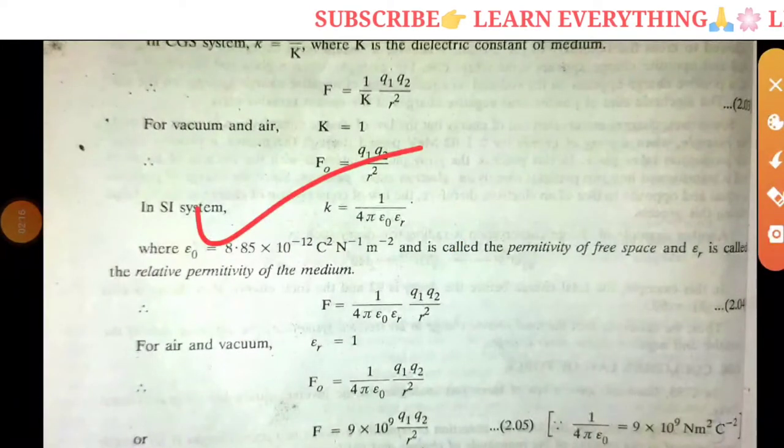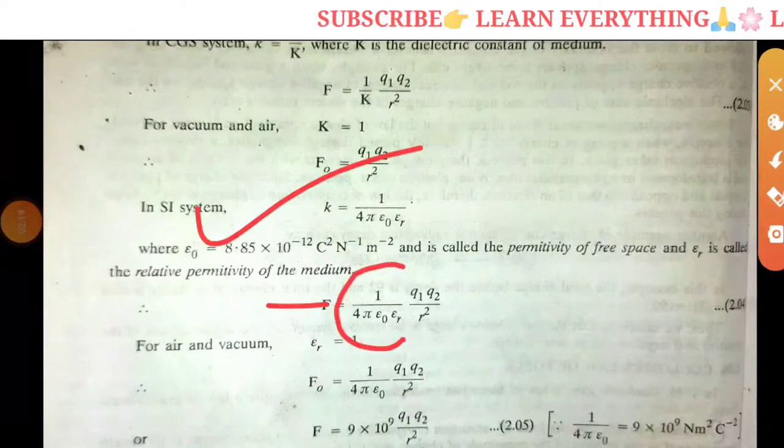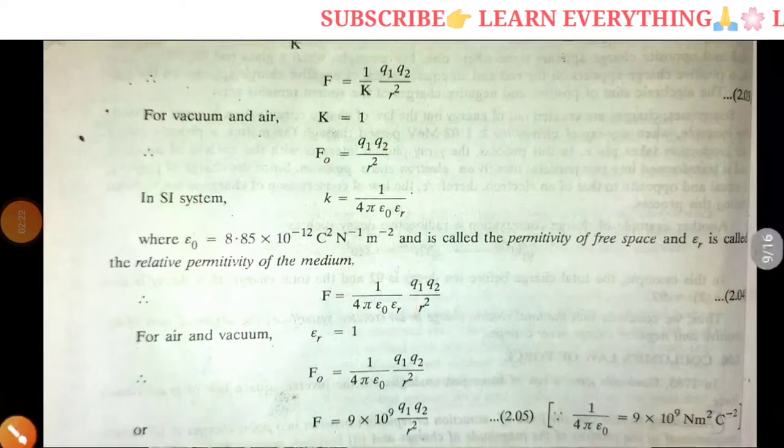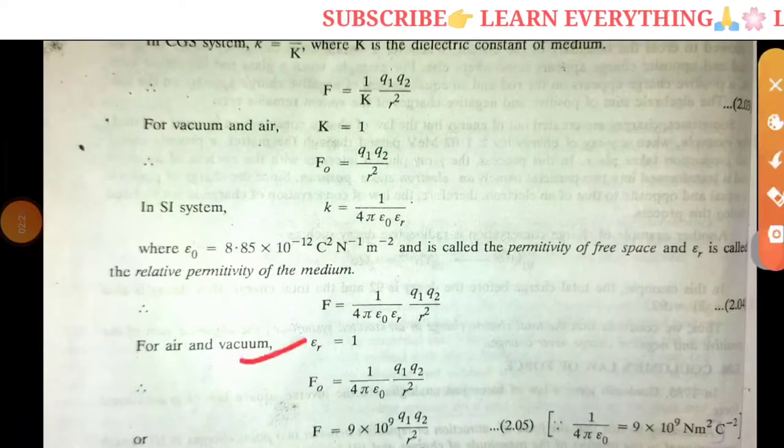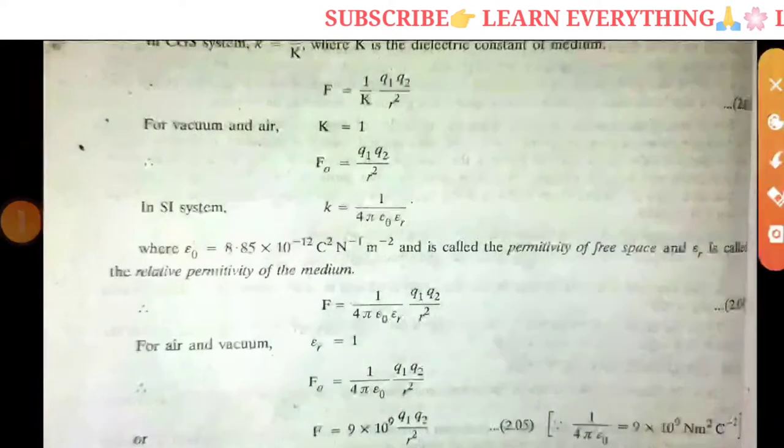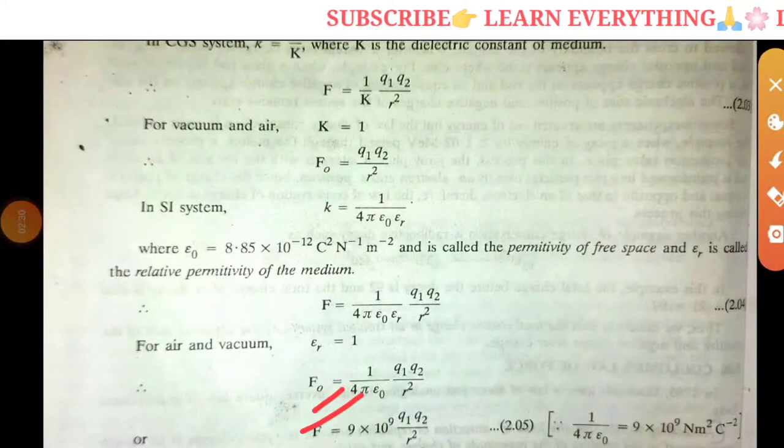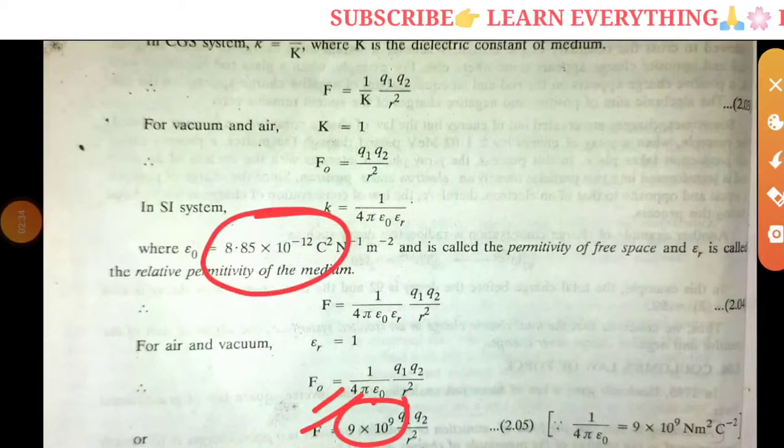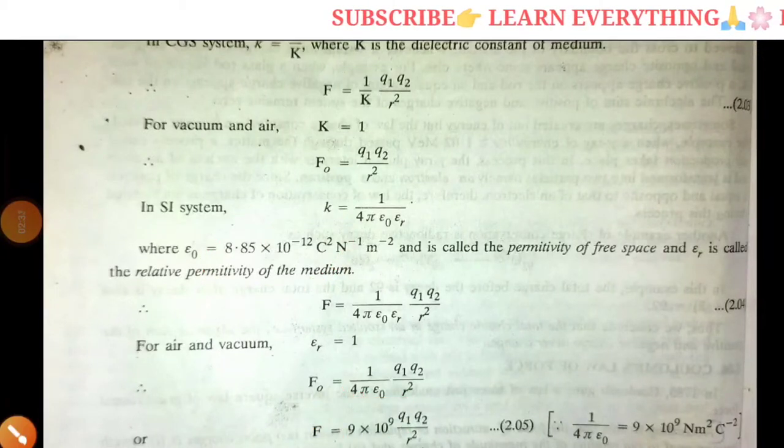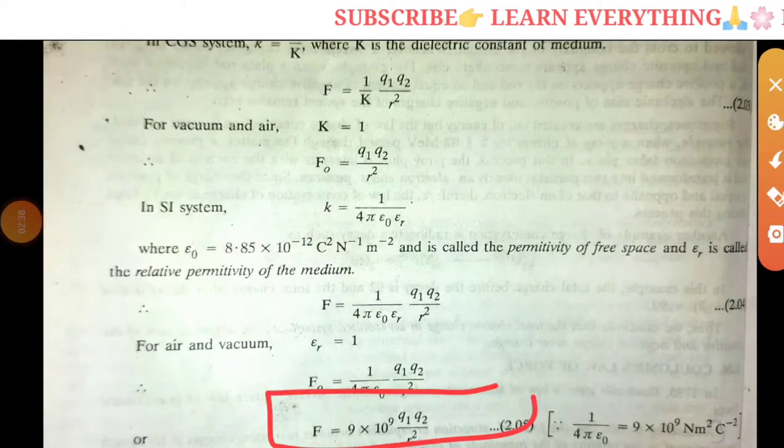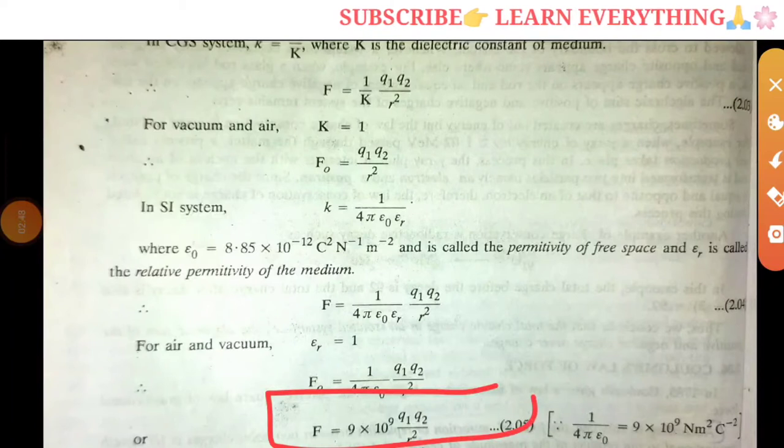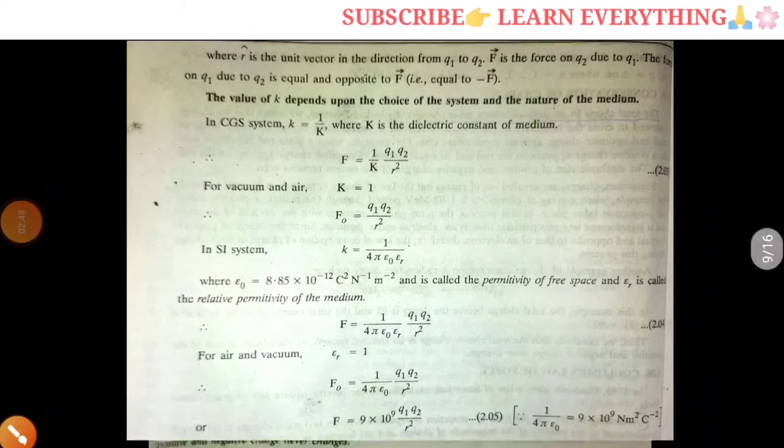Let's put these values. For a medium, K equals 1 over 4 pi epsilon_0 epsilon_r times Q1 Q2 over R squared. We can simplify this. For vacuum, F equals 9 times 10 to the 9 times Q1 Q2 over R squared. This formula will be helpful when we solve numerical problems.